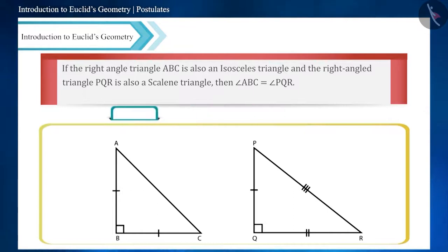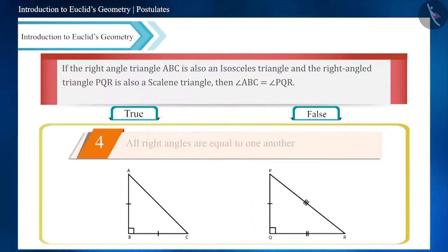If you remember the fourth postulate of Euclid, two right angles are equal to one another.